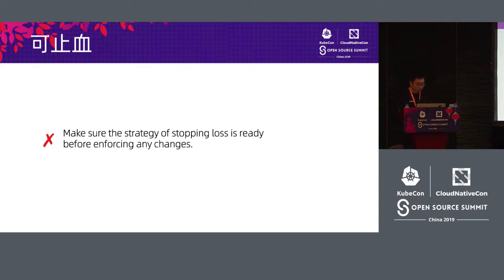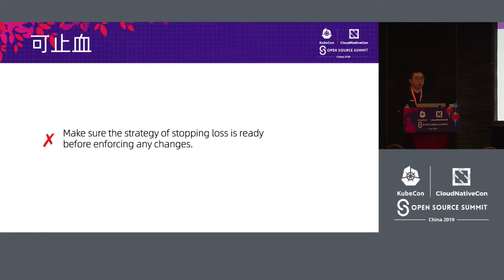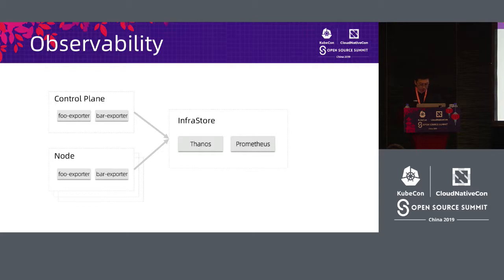We need to make sure all online strategies have stop-loss plans ready before enforcing any changes. For stop-loss methods, we have many options such as rolling out and others. When treating a failure, if you have experience you may restart, reload, and release again. When stopping the loss, we need to simplify the process and have a low-cost procedure. The simpler the better when doing it online — because if it is complicated, other failures might occur.